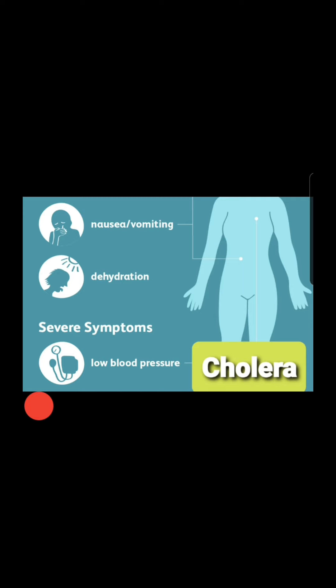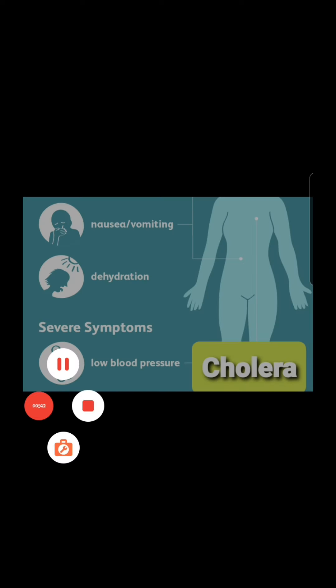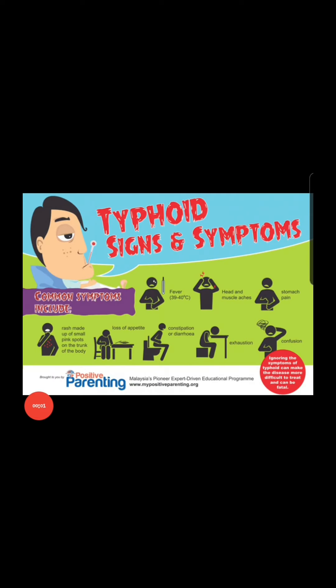If you consume contaminated food or water, you may also suffer from typhoid. The symptoms of typhoid include fever, head and muscle aches, stomach pain, loss of appetite — meaning you don't feel hungry at all — constipation or diarrhea, and a lot of exhaustion where your body becomes very tired. These are the symptoms of typhoid, a communicable disease spread by contaminated food or water.